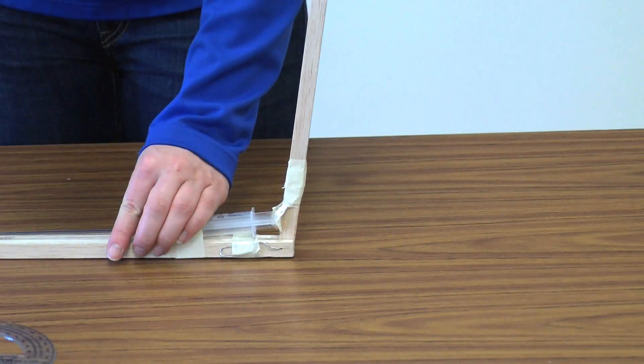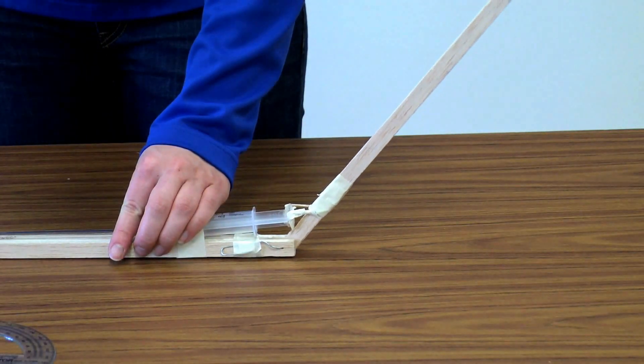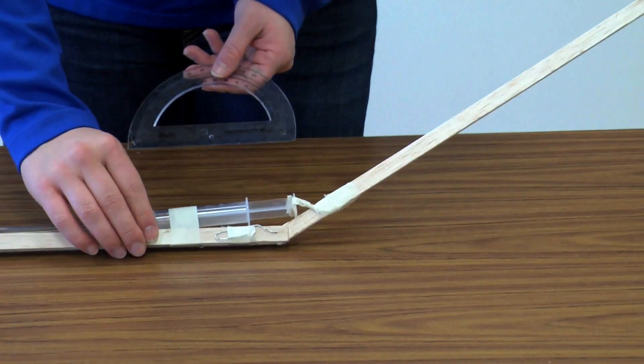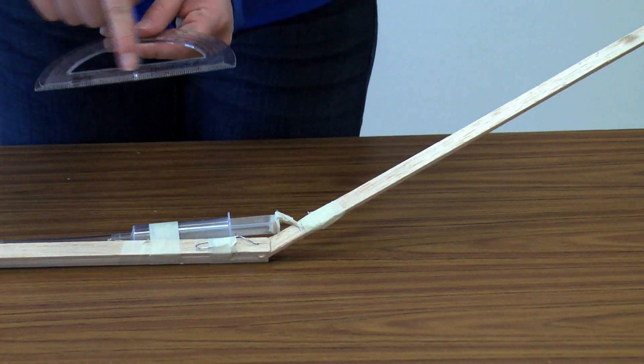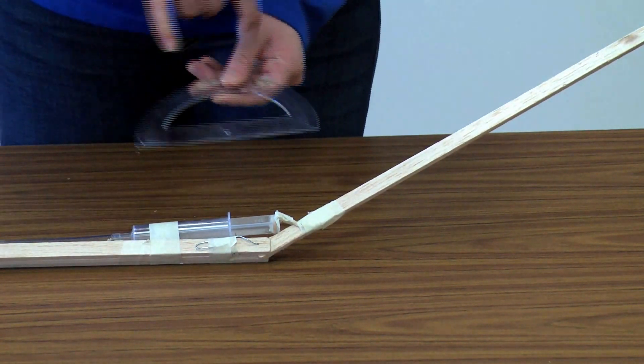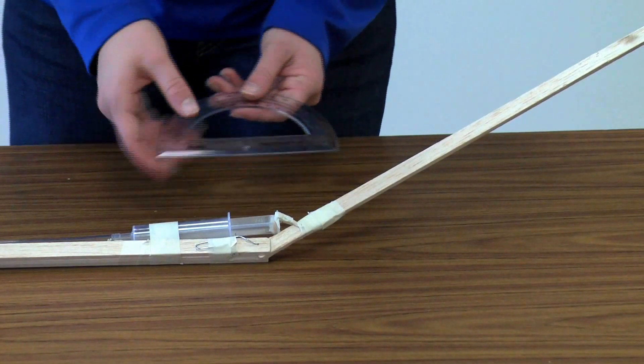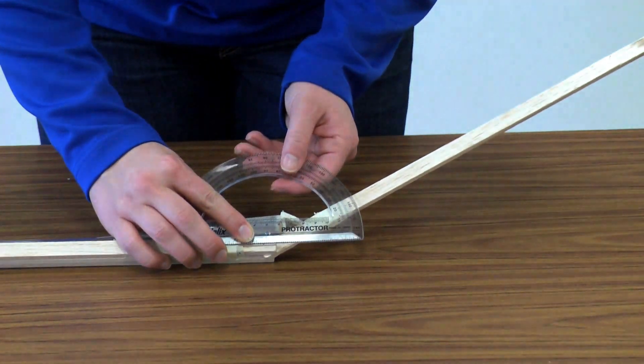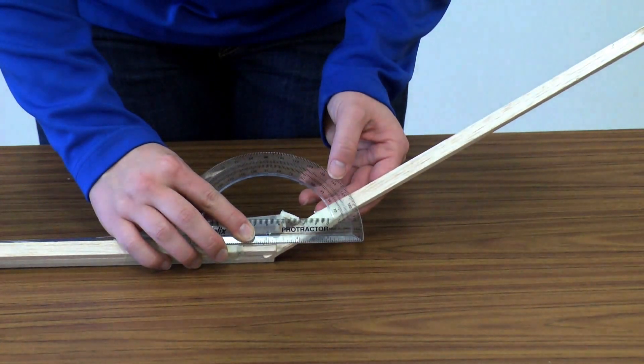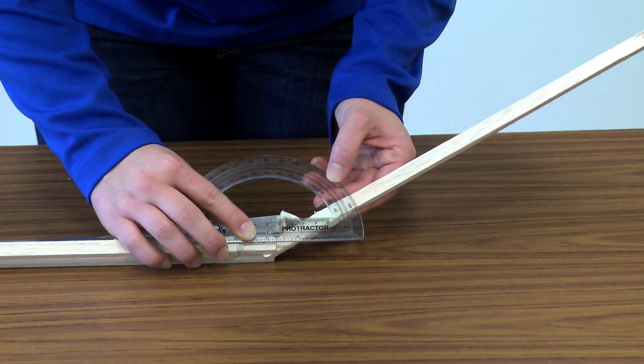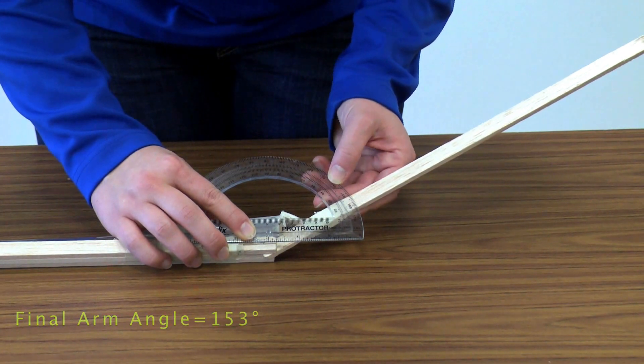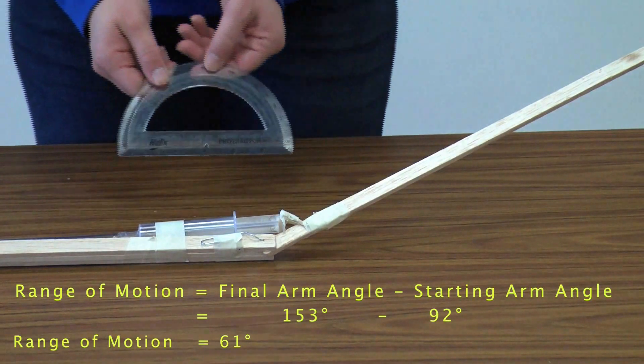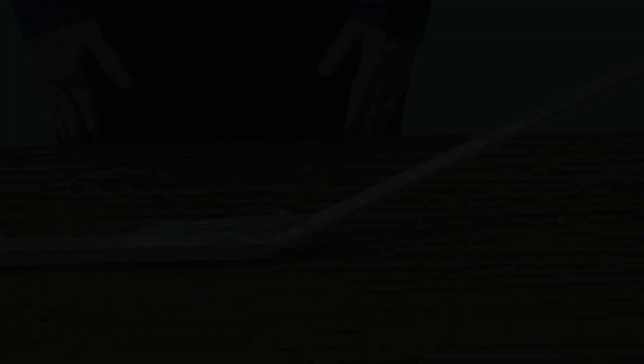In order to determine the total measurement of their arms, students will have to find the maximum range of motion. They will measure the beginning and end of their motion. Now we will measure the angle at the end of their motion. Again, put the center point at the center of the elbow on the inside edge. Now that we're in an angle greater than 90 degrees, we should read from the larger number, which is 153 degrees. Subtracting 153 minus 92 leaves us with a total range of motion of 61 degrees.